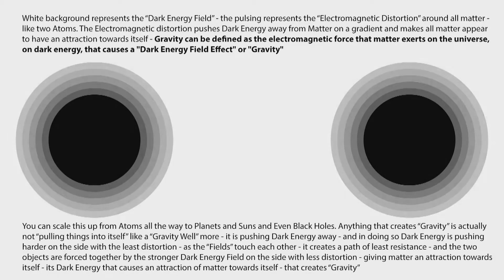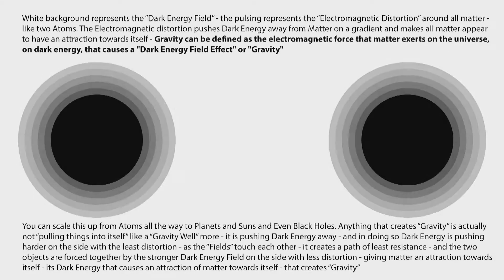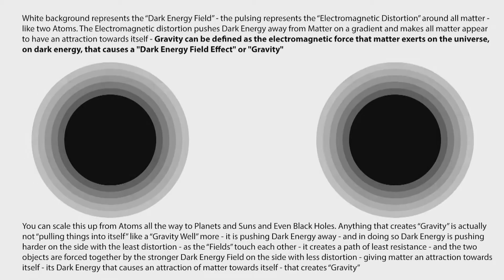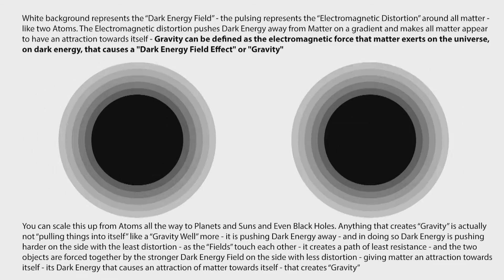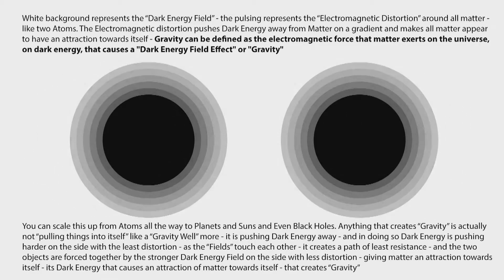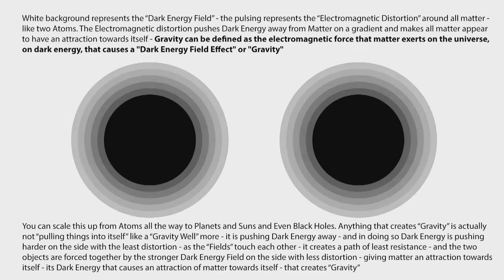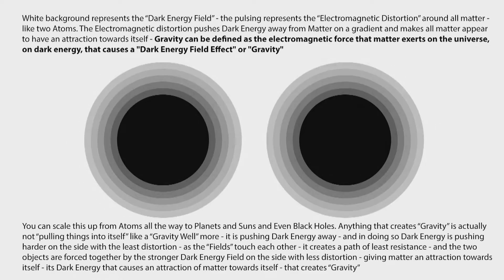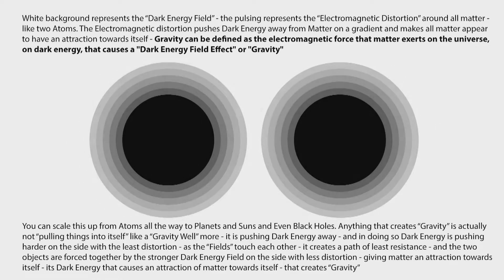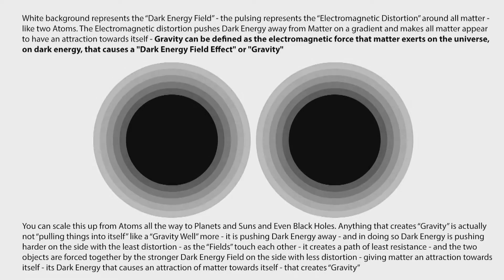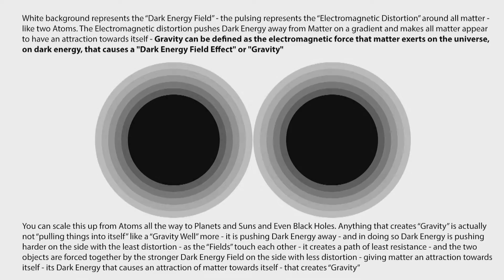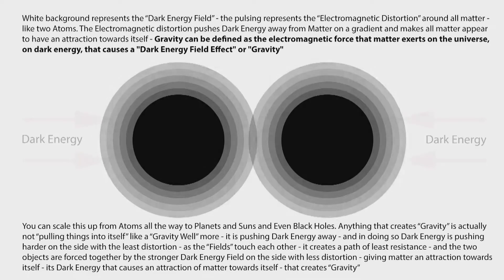The white background represents the dark energy field. The pulsing represents the electromagnetic distortion around all matter, like two atoms. The electromagnetic distortion pushes dark energy away from matter on a gradient and makes all matter appear to have an attraction towards itself. Gravity can be defined as the electromagnetic force that matter exerts on the universe — on dark energy — that causes a dark energy field effect, or gravity.